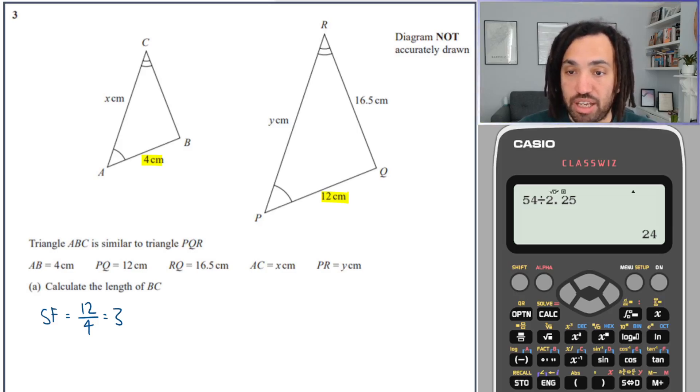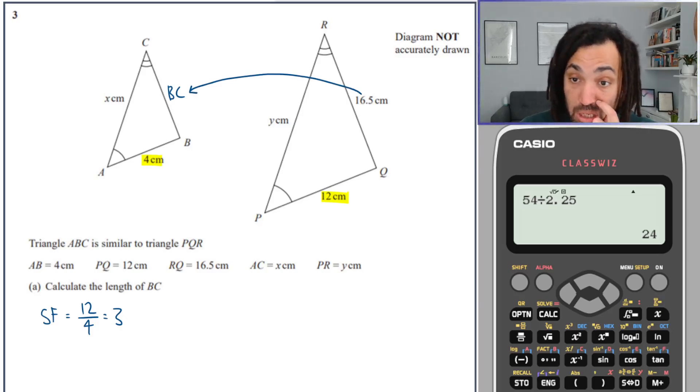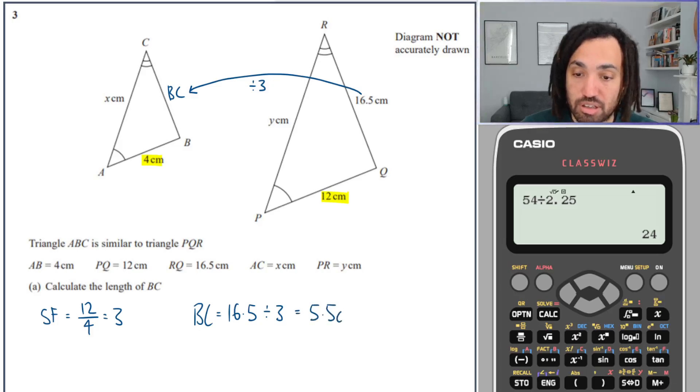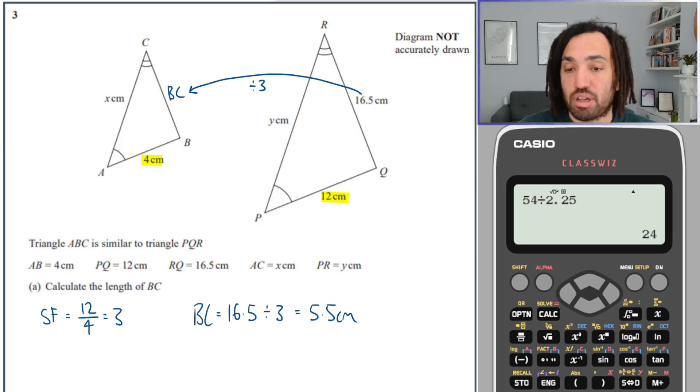So BC, how am I going to get there? Well this corresponding side can go over to here, and I'm going from the larger one to the smaller one, so I need to be dividing by the scale factor. So BC is equal to 16.5 divided by 3, which is equal to 5.5. Perfect.